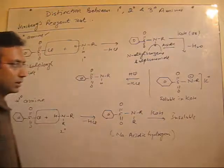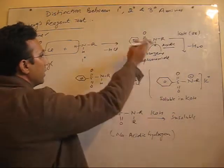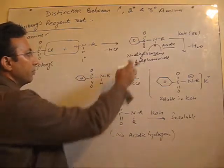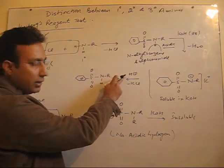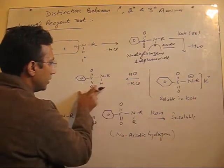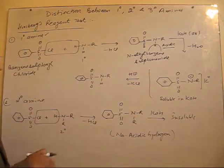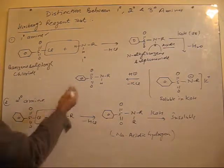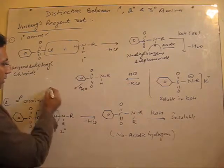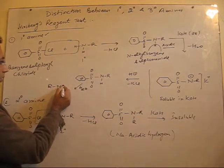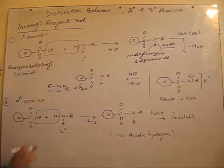As a result, a salt is formed. From this salt, you can again regenerate the alkyl benzene sulfonamide when you dilute it with an acid — it can be further regenerated. This test is also used to separate primary, secondary, and tertiary amines from a mixture. If this compound is further dissolved in water, you will get the primary amine back along with benzene sulfonamide.